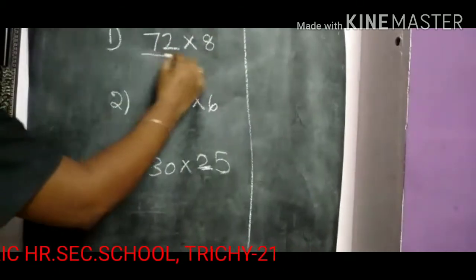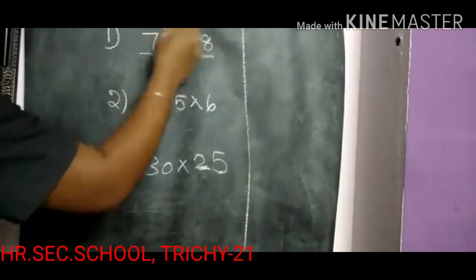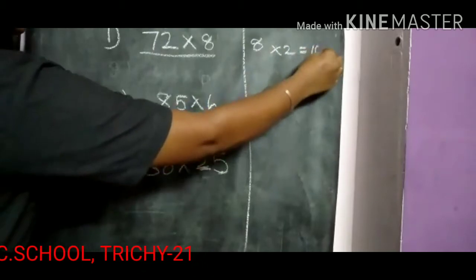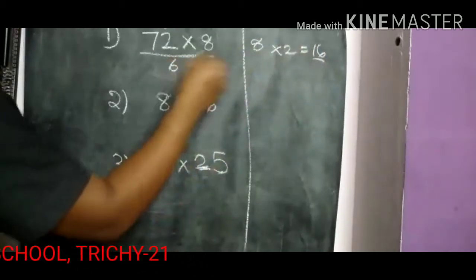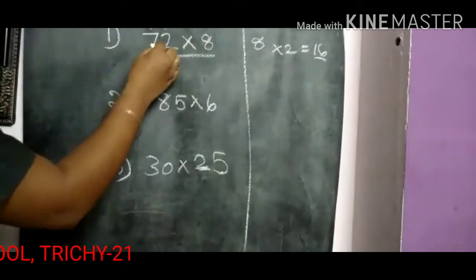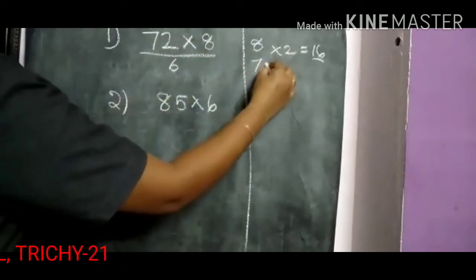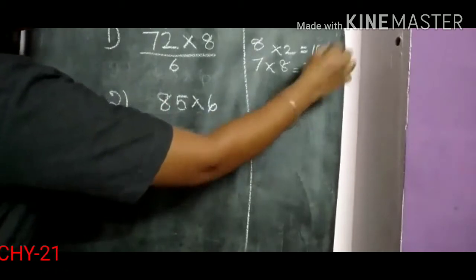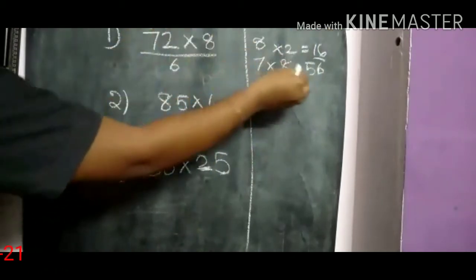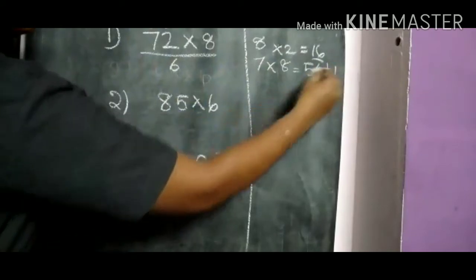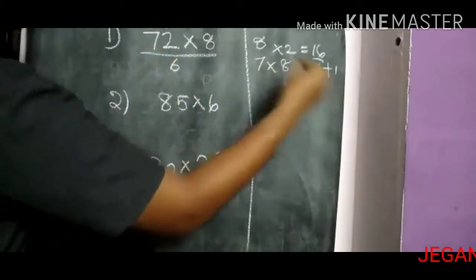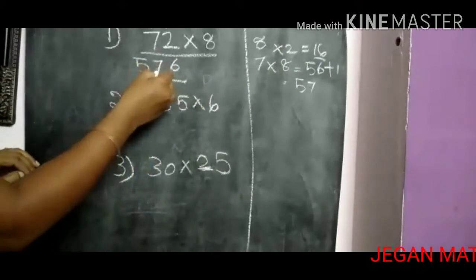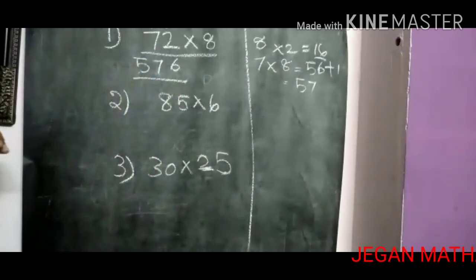So first start from the 1's place number. 8 2's are 16 — write 6 and balance 1, carry over to 10's place. Then 8 7's are 56. Already I have 1, so 56 plus 1 is 57. So final answer is 576.